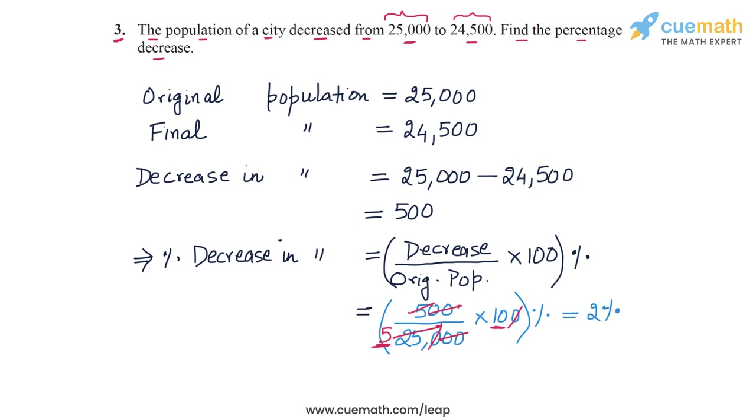This means that the percentage decrease in population is 2%. This is the answer for question number 3.